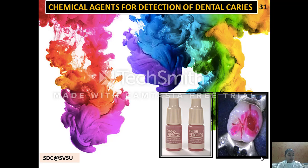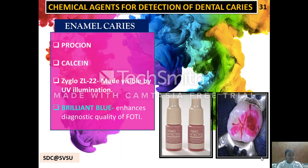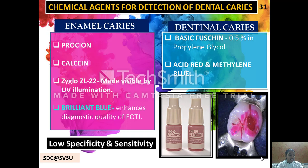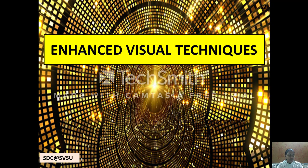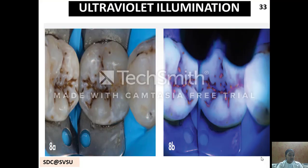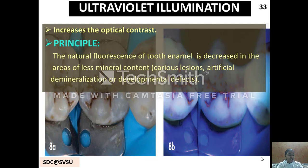Dyes are chemical agents used for detection of dental caries. They are non-specific protein-based agents that usually stain the organic matrix of less mineralized tooth structure but not the bacteria. Enamel caries can be detected by prosciven, zyglozadal 22 — made visible by UV illumination — and brilliant blue. Dyes used include basic fuchsin 25% in propylene glycol, acid red and methylene blue. Their limited use is due to low specificity and low sensitivity. Ultraviolet illumination increases optical contrast, based on the principle that natural fluorescence of tooth enamel decreases in areas of less mineral content; caries lesions appear as dark spots against a fluorescent background.